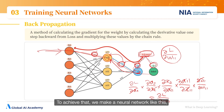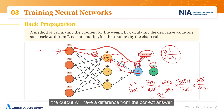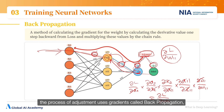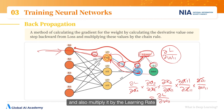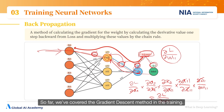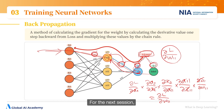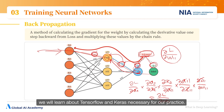To achieve that, we make a neural network. We input a cat image as data with a correct answer telling it's a cat, get a result as output, find the difference from the correct answer, get the loss, and try to minimize it. If the loss can be 0, the computer can predict perfectly accurately. We train it by adjusting all the necessary weights to make the loss 0. The adjustment process uses gradients via back propagation multiplied by the learning rate. So far we've covered the gradient descent method in training. We began with machine learning and deep learning, discussed its development, and the training mechanism. For the next session, we will learn about TensorFlow and Keras, which are necessary for our practice.